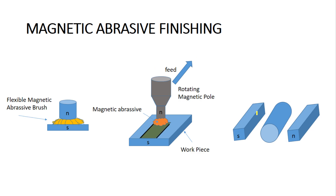In magnetic abrasive finishing, unlike abrasive flow machining, we have control over the abrasive particles. Looking at the figure, the tool is made the north pole and the workpiece is made the south pole. Magnetic field lines emerge from north to south, and the abrasive particles align with these magnetic field lines to form a flexible magnetic abrasive brush, which performs the machining.